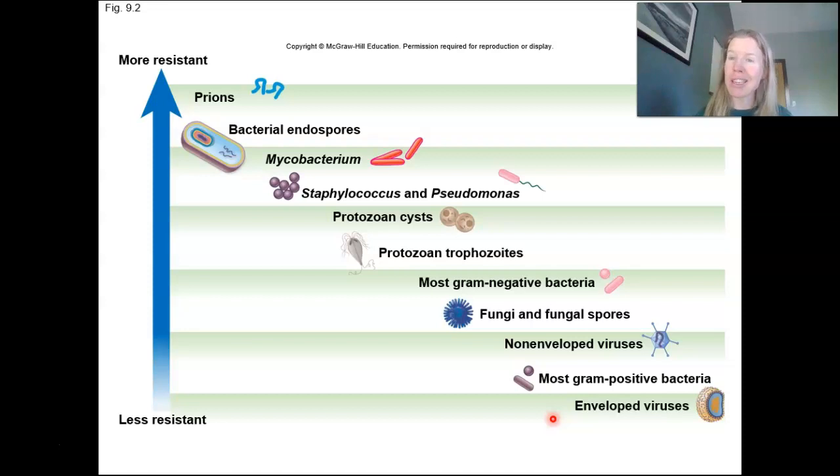Here's our gram positive. One thing you might notice is that gram negatives are more difficult to kill than gram positive. And that kind of makes sense, right? We've got an outer membrane up here that might be protecting us from alcohol or some other chemical.